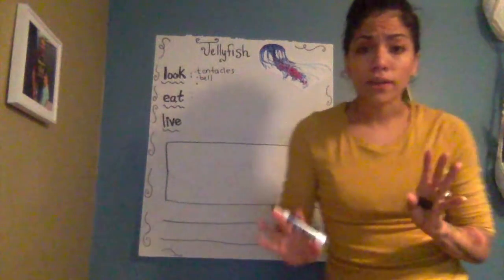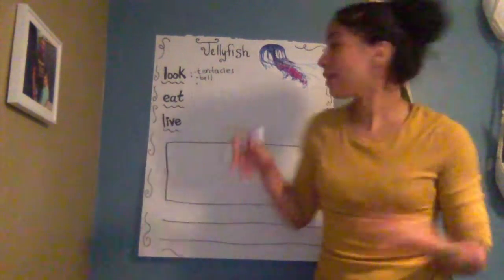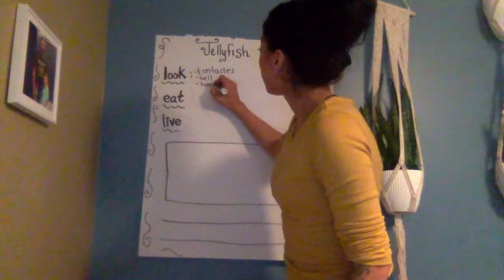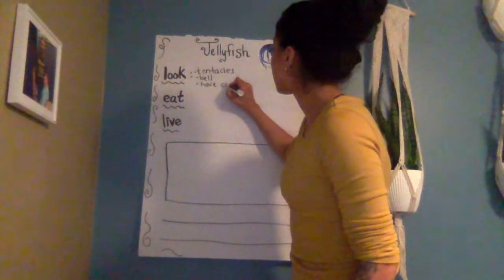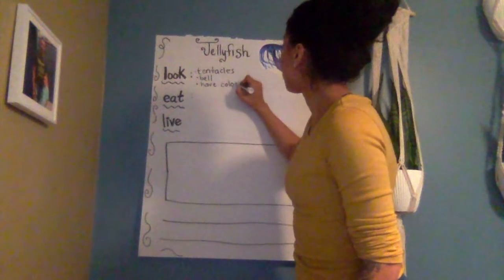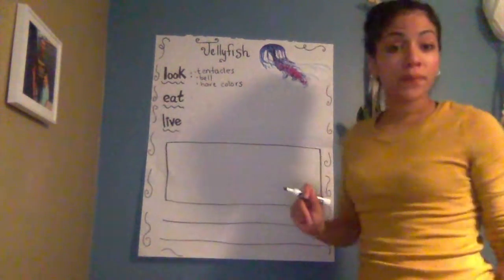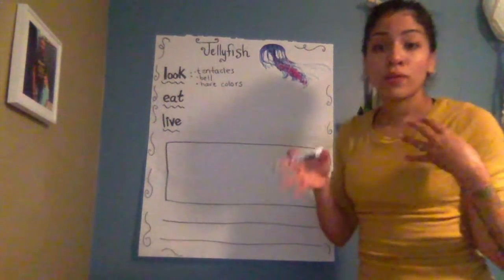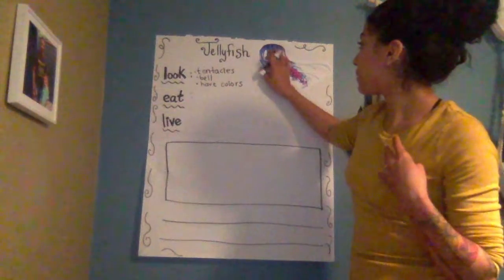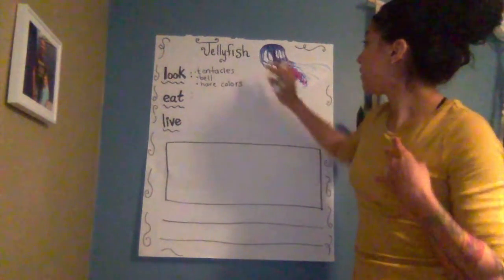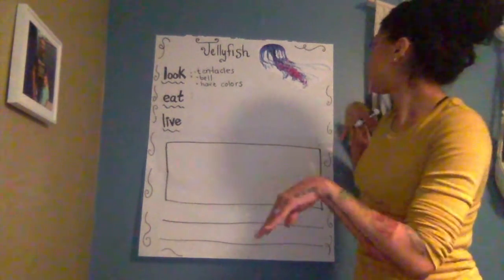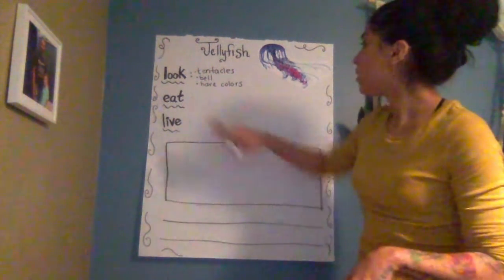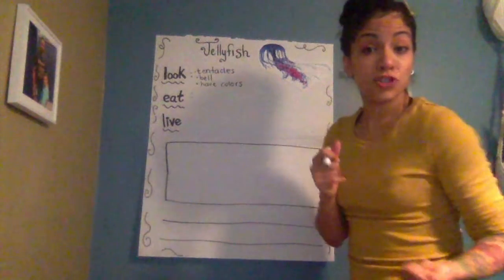It can be different colors, so I'm going to write 'colors.' They do have a mouth, but we can't really see it — it's inside and underneath. So I think we're pretty good for what it looks like!